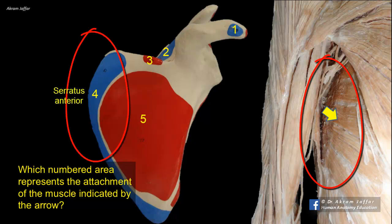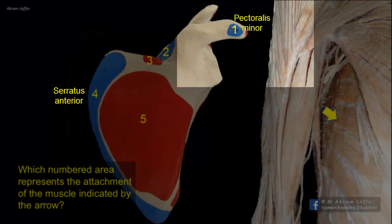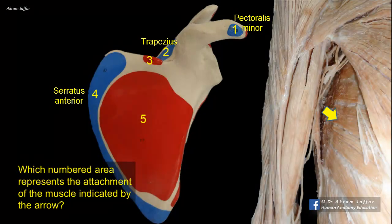The other attachments are: one for pectoralis minor muscle attached to the coracoid process, two for trapezius muscle attached to the spine of the scapula, three for the omohyoid attached to the superior border close to the suprascapular notch, and five for subscapularis attached to the subscapular fossa.